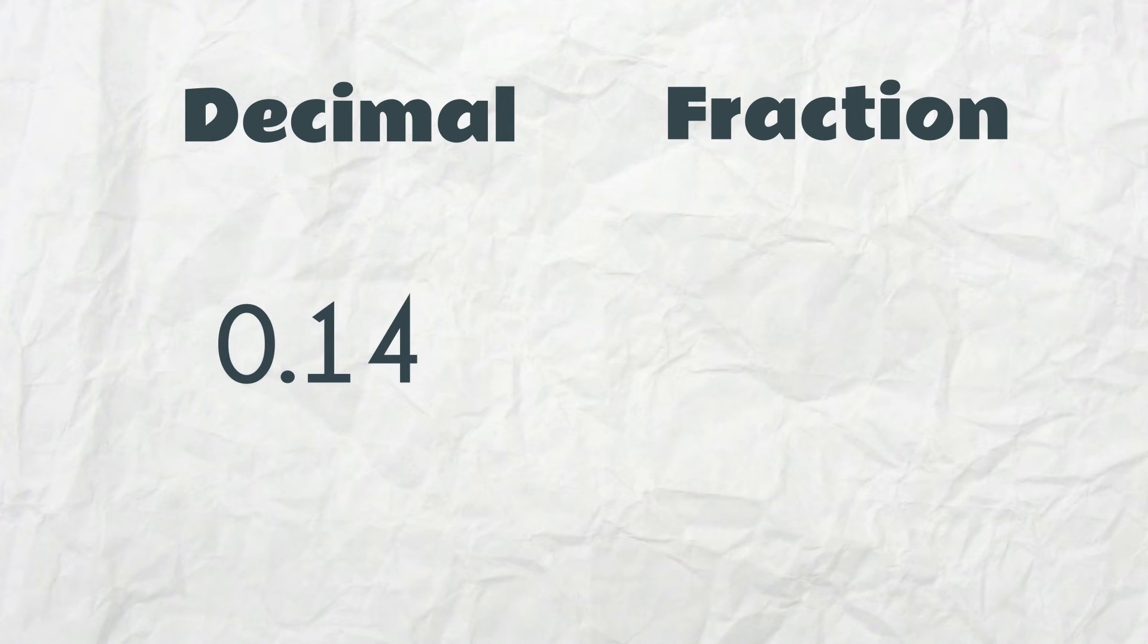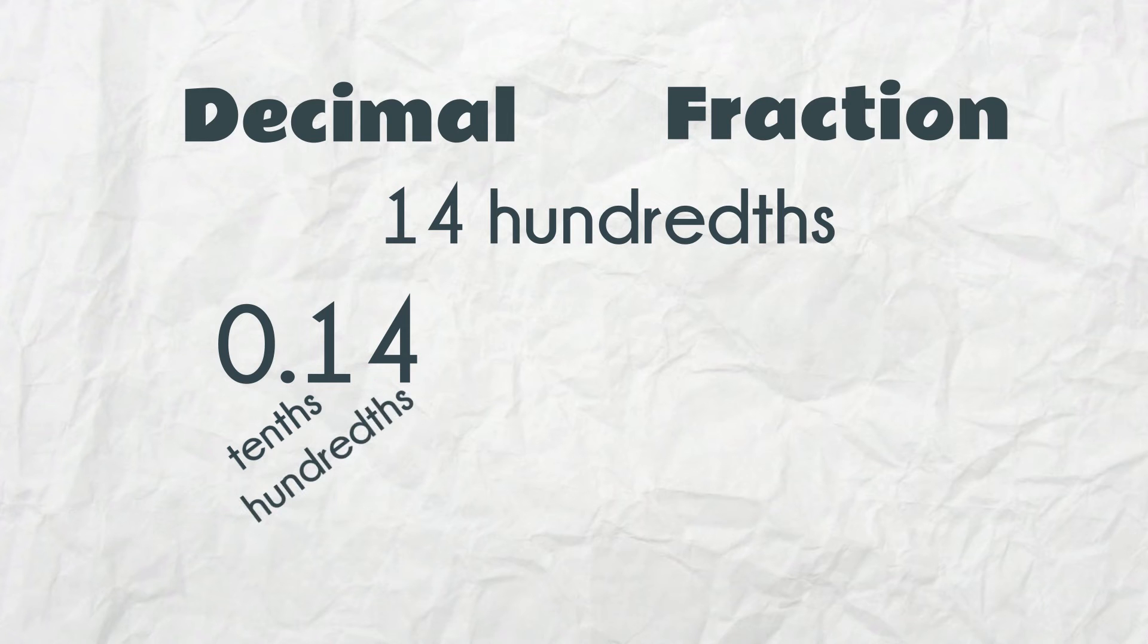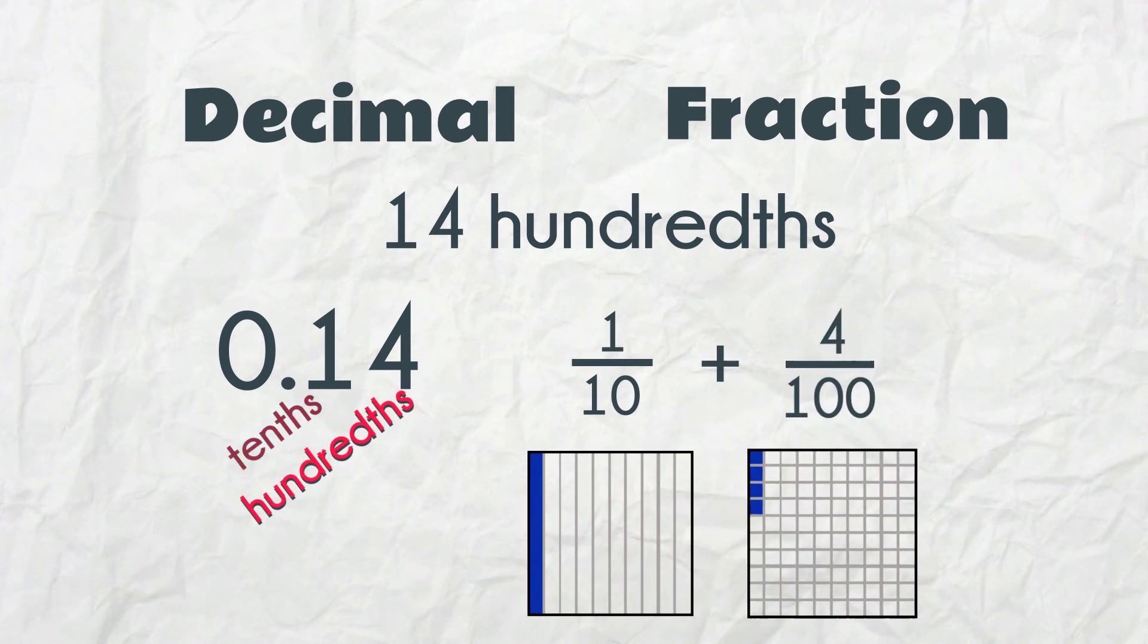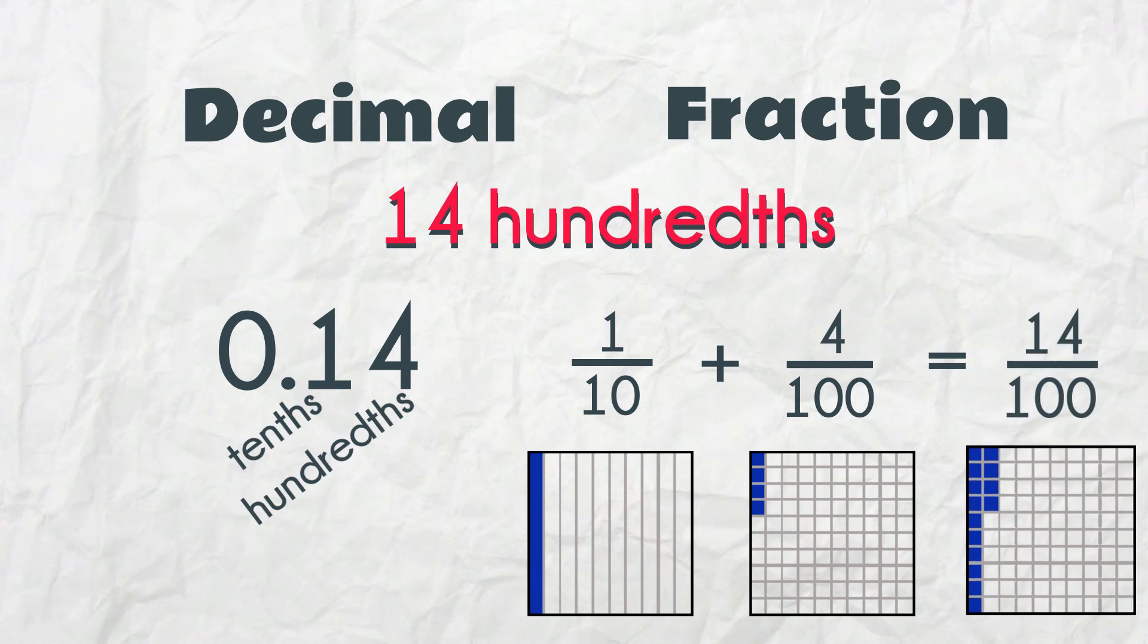Here we have the decimal number 0.14. It can be read as 14 hundredths. We can see that it is made up of 1 tenth and 4 hundredths. 1 tenth plus 4 hundredths equals 14 hundredths.